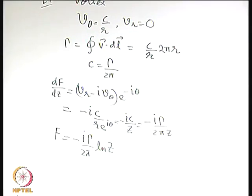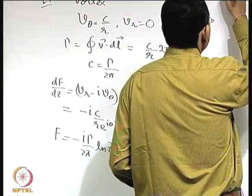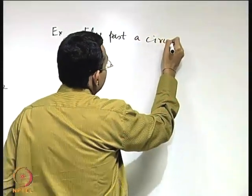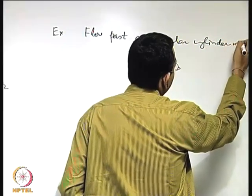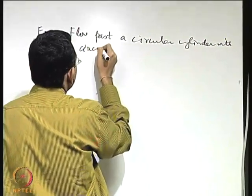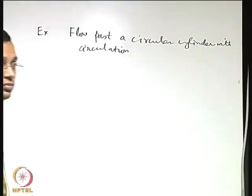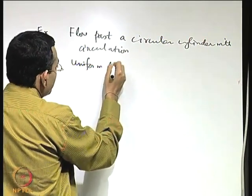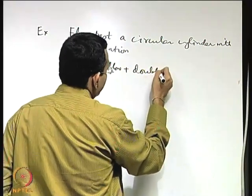Now let us say we want to simulate flow past a circular cylinder with circulation. Flow past a circular cylinder without circulation was uniform flow plus doublet. If you want to introduce circulation, you have to use this vortex — so it is uniform flow plus doublet plus vortex.